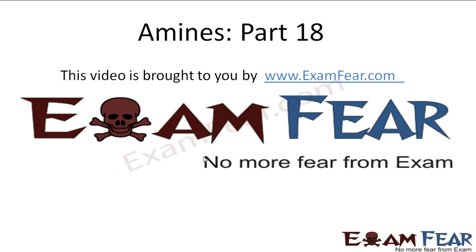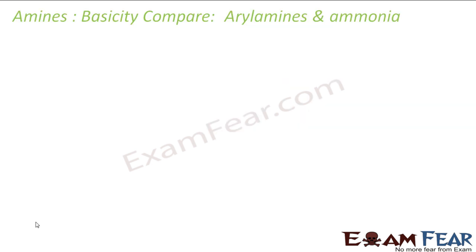Hello friends, this video on Amines part 18 is brought to you by examfear.com. Aryl amines are weaker than ammonia, so the strength order is: alkylamine is stronger, then ammonia, then arylamine.